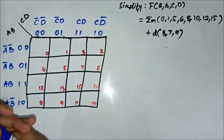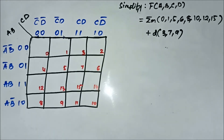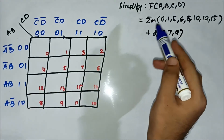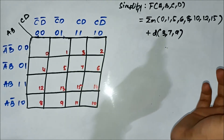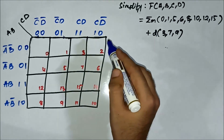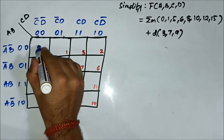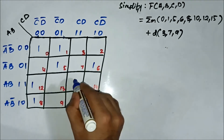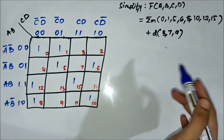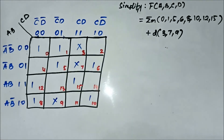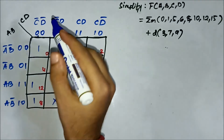Here we have another question on don't care condition SOP K-map simplification. We have the minterm values and the don't care values. We will first mark the minterm values as 1: 0, 1, 5, 6, 8, 10, 12, 15. The don't care values are 3, 7, and 9, marked as X.